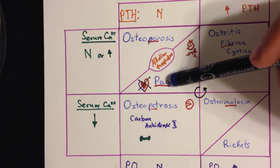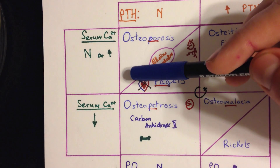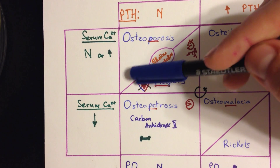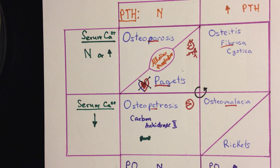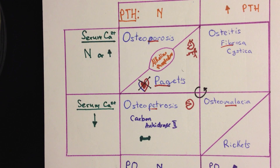Another important thing about Paget's disease: there's a heart shown here with a connection between an artery and a vein. You get fistulas connecting an artery and a vein in Paget's disease, and this can cause an increased amount of blood going to the heart. The patient will eventually die from high output cardiac failure.